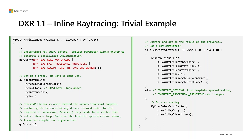The API hides access to the acceleration structure, leaving it to the hardware and driver. All necessary app code surrounding this fixed-function acceleration structure access for handling both enumerated candidate hits and the results of a query can be self-contained in the shader driving the query object.